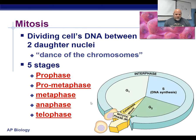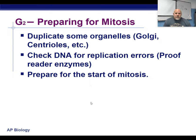Then we roll into G2. G2 is a phase after S where we're just getting ready for mitosis. We're going to duplicate some of the organelles that weren't duplicated earlier — we need to duplicate our centrioles, our Golgi, and make more mitochondria and ribosomes. Then the DNA gets checked for any replication errors, those are corrected, and we basically prepare for the start of mitosis.